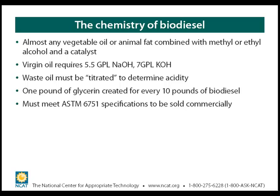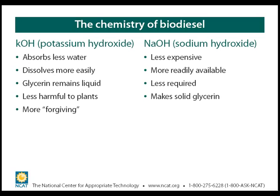Almost any vegetable oil or animal fat combined with methyl or ethyl alcohol and a catalyst can be used to produce biodiesel. Virgin vegetable oil requires about 5.5 grams per liter of NaOH or 7 grams per liter of KOH. Waste oil like restaurant fryer grease must be titrated to determine the acidity and figure out how much extra catalyst is needed. One pound of glycerin is created for every 10 pounds of biodiesel — managing that waste stream is one of the most important things to consider before you decide to make your own biodiesel. Finally, your biodiesel must meet ASTM 6751 specifications to be sold commercially — those are standards that determine the flashpoint, stability, and purity of your biodiesel.